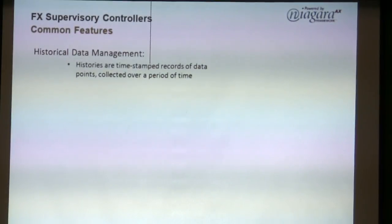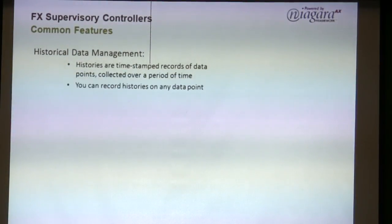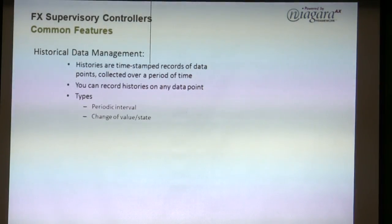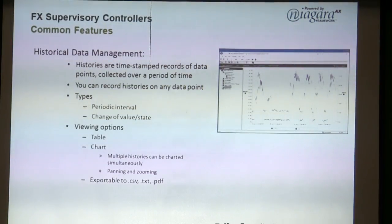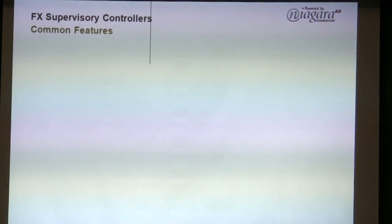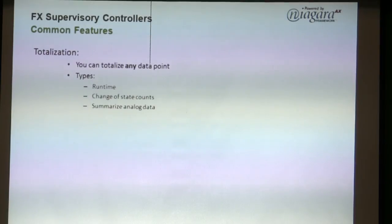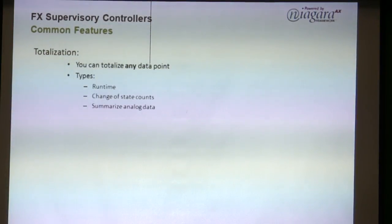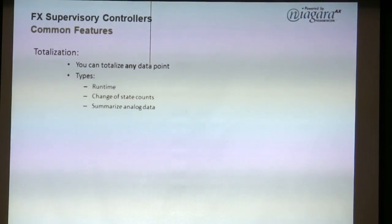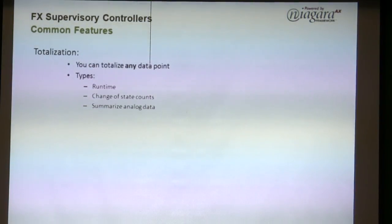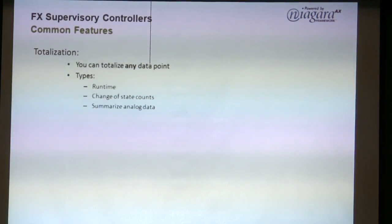Historical data management covers all your trending and reports. Totalization is useful — for example, if you have two Modbus pumps doing lead-lag, you can track runtime on each one. So if the last one wore out at a certain point, you can use that data for budgeting and plan maintenance on the current one proactively.